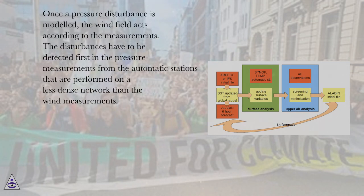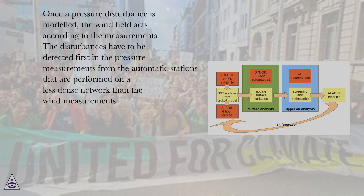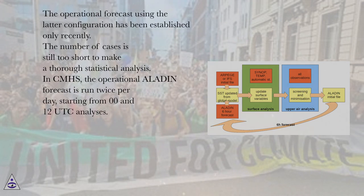These conclusions were based on analysis of a number of cases of bora associated with a small-scale pressure disturbance. Once a pressure disturbance is modeled, the wind field acts according to the measurements. The disturbances have to be detected first in pressure measurements from automatic stations, which are performed on a less dense network than the wind measurements. The operational forecast using this configuration has been established only recently, and the number of cases is still too short to make a thorough statistical analysis.